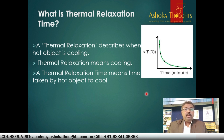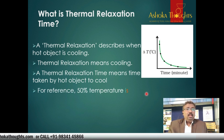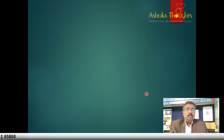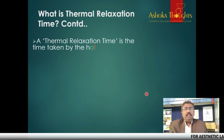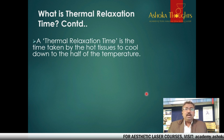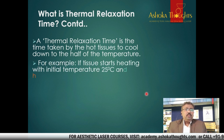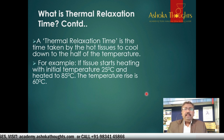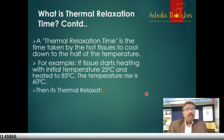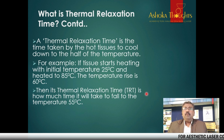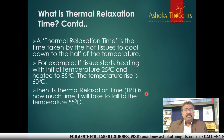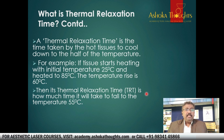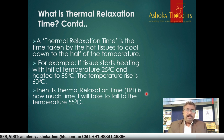Thermal Relaxation Time means the time taken by a hot object to cool. For reference, 50% of the temperature rise is considered. Thermal Relaxation Time is the time taken by hot tissues to cool down to half of the temperature rise. For example, if tissue starts at an initial temperature of 25 degree Celsius (room temperature) and is heated to 85 degree Celsius, the temperature rises by 60 degrees. Then TRT is the time it takes to fall to 55 degree Celsius. How does 55 come? 85 minus 25 equals 60 degrees; half of 60 is 30; and 30 plus 25 equals 55 degrees.